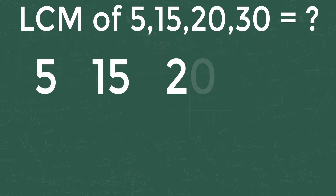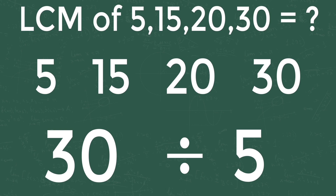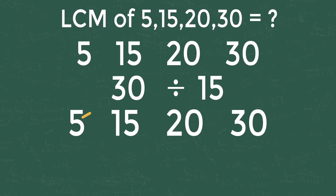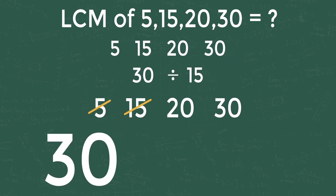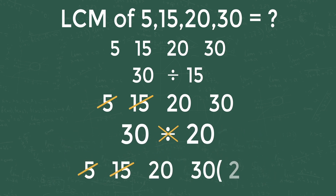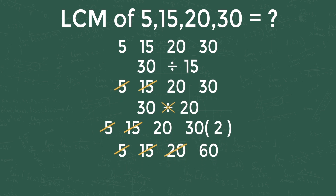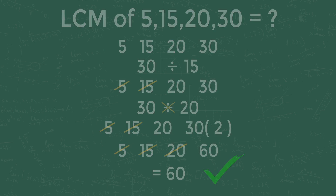Take the numbers 5, 15, 20, and 30. We can see 30 is exactly divisible by 5 and 15, so I am removing 5 and 15. But 30 is not exactly divisible by 20. In this case, we need to multiply the highest number by 2, 3, 4, and so on, and check whether it is exactly divisible by the remaining numbers. Multiply 30 by 2 and it becomes 60, and 60 is exactly divisible by 20. So the answer is 60.